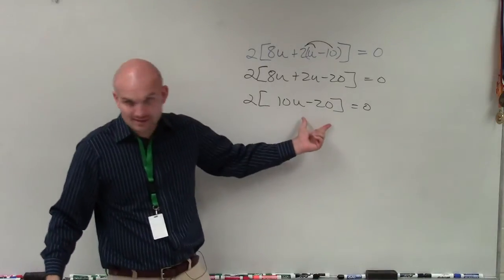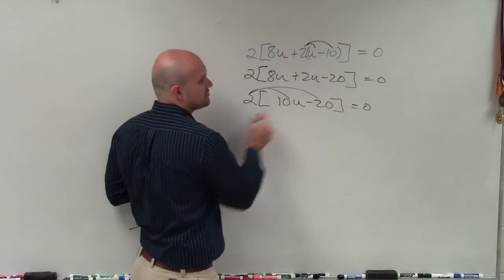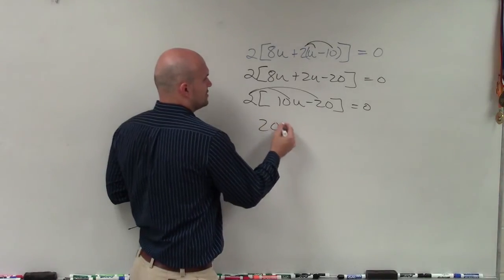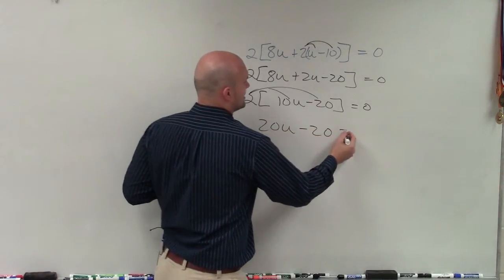Now, can I do anything inside there? No, but I can apply distributive property again. So therefore, I have 20u minus 40 equals 0.